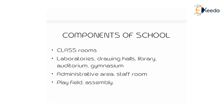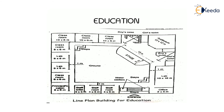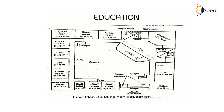The components of schools are: classrooms, laboratories, drawing hall, library, auditorium, gymnasium, administrative area, staff room, play field, and assembly area. Looking at a simple line plan of an educational building, you can see classrooms, an open area for play field or assembly, staff room, administrative office, auditorium, and boys' and girls' toilet blocks — showing that all the components required in an educational building are included.